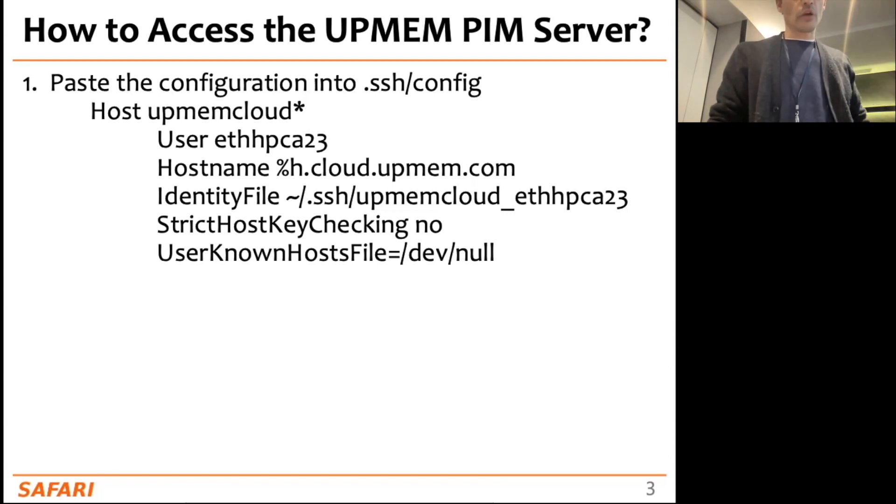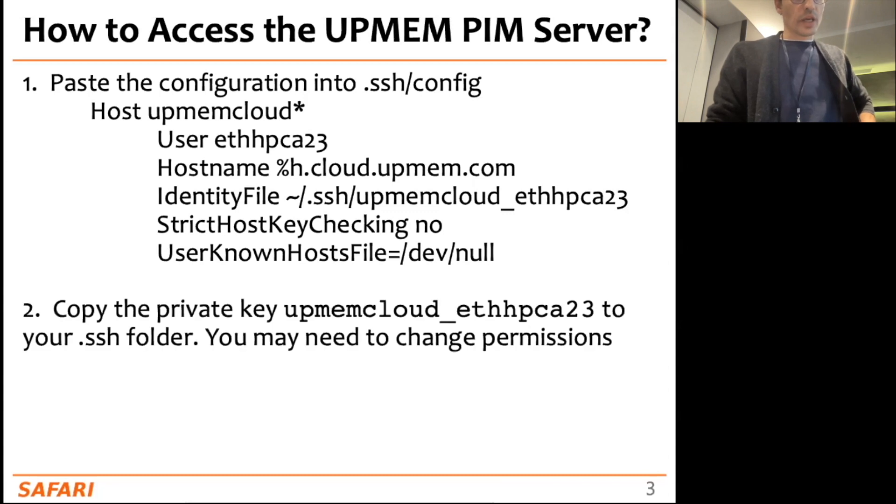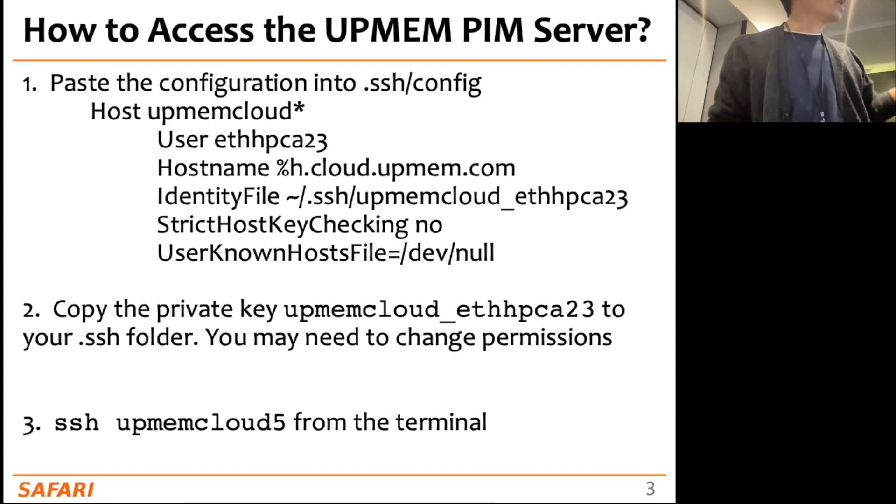You need to copy this private key with this configuration file into your .ssh folder. You may need to change permissions - that's also indicated in the handout. Next thing is just access the server - upmemcloud5 is the server we have access to, so just type ssh upmemcloud5 from the terminal.